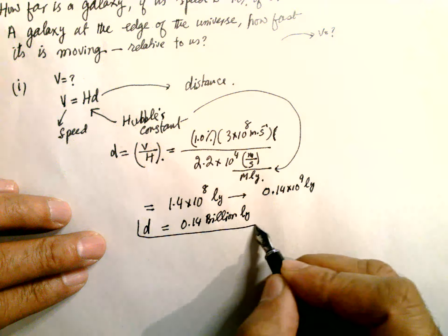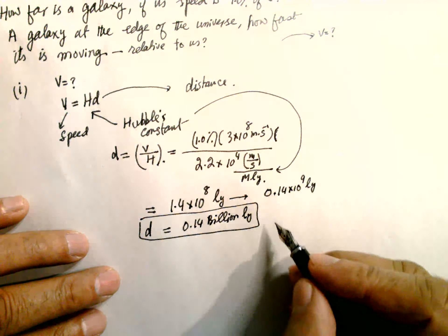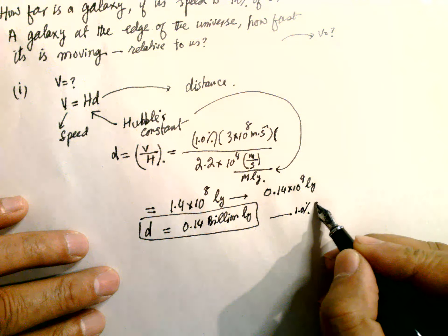So this is the distance from Earth if it is moving at only 1% of C.